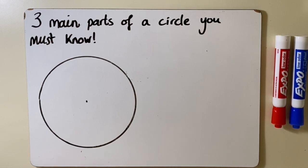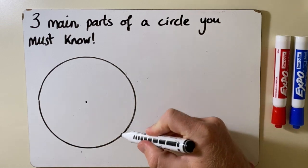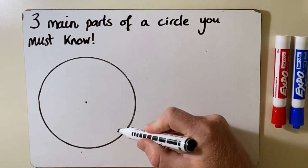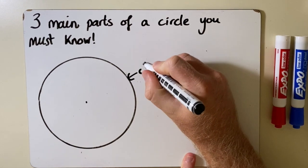I'm going to start with the three main ones that we use all the time when we talk about circles. The first one is the outside edge of the circle. So the actual line that goes all the way around the circle is called the circumference.